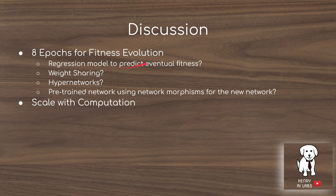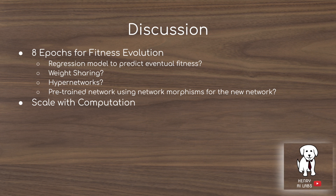An interesting characteristic is the use of only eight epochs for fitness evaluation, since training a deep CNN for just eight epochs will not result in convergence or a good indication of future performance. One technique could be a regression model that predicts eventual fitness, taking in information about the epochs and network complexity. Weight sharing could also be used so networks aren't all trained from scratch — hypernetworks might predict their initializations. Network morphism, which translates one network topology to another while preserving functional similarity, could also be used to initialize networks rather than training from scratch. Finally, simply scaling up computation would also benefit this algorithm.